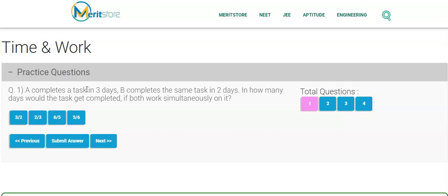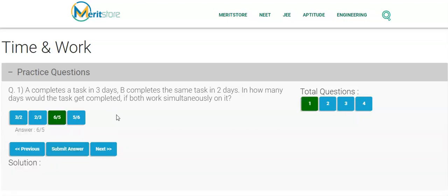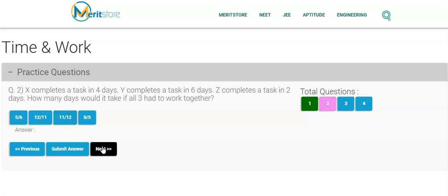So in one day, A and B together will complete one-third plus one-half, which is five-sixths. They complete five-sixths of a task in a day, so how many days will it take? The reciprocal: six-fifths. I hope you understood the technique here. Calculate how much each of them will complete in one day, add it up, and then reciprocal. That is the simple fundamental. I am going to solve three more questions so that you understand what I am talking about.